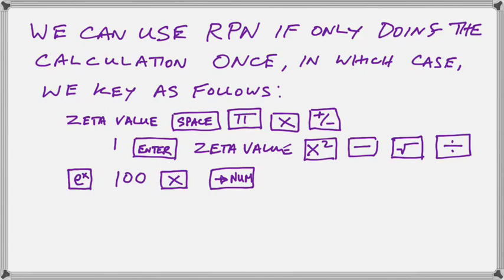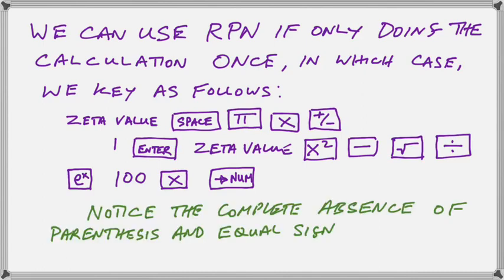Now, after we use the RPN mode, you will notice that there is no parenthesis and no equal sign. We enter the values before the operators. So notice that we put in the zeta value and the pi before entering the multiply to multiply them together.